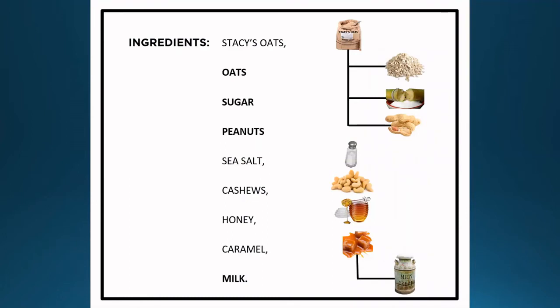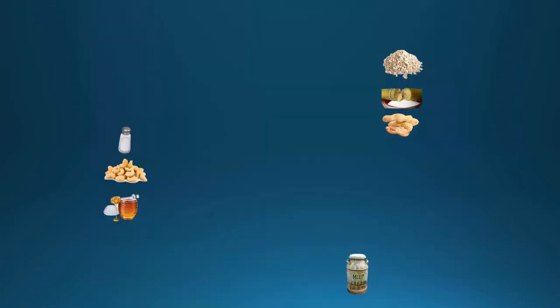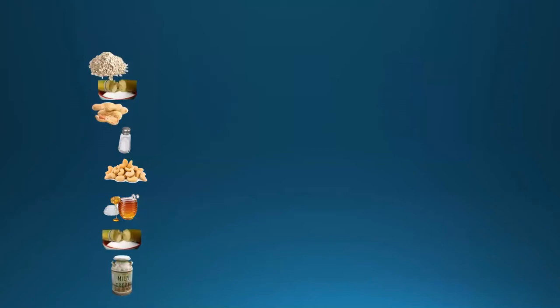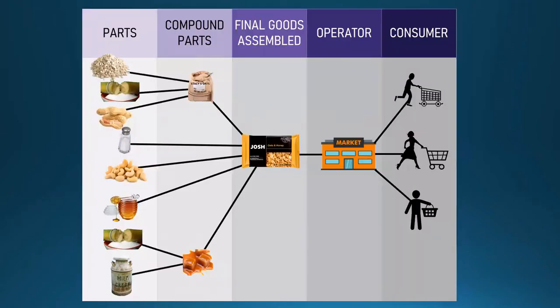Except now when we actually try to add more supply chain transparency, Stacy too has a supplier, as does the caramel manufacturer. I come to learn that she uses raw oats, cane sugar, and peanuts in her ingredients list. And caramel is a pretty simplistic version of milk or cream plus sugar as well. So these atomic parts are then aggregated into the compound parts of Stacy's oats and the caramel into Josh's granola bar — and they're delicious — sold into the marketplace to these one-through-n consumers.